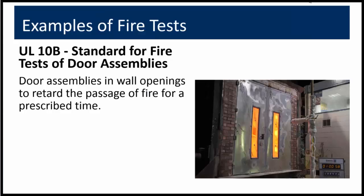Brief examples of some fire tests that you might have encountered in your project work. Many of these tests rely upon the same fire exposure we'll be reviewing in the E119 fire test. This test, UL10B, covers fire door assemblies for use in wall openings to resist the passage of fire. It's intended to evaluate the ability of the door assembly to remain in a wall during the test exposure. This UL standard 10B has companion standards written by NFPA or ASTM with different standard designations.